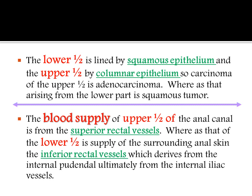Now, coming to the blood supply: the upper half of the anal canal is supplied by the superior rectal vessels, while the lower half is supplied by the inferior rectal vessels. The inferior rectal vessels derive from the internal pudendal artery, which is a branch of the internal iliac vessel.